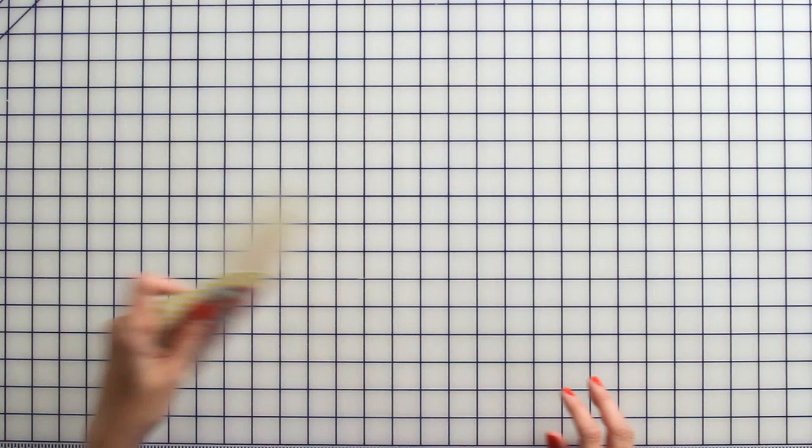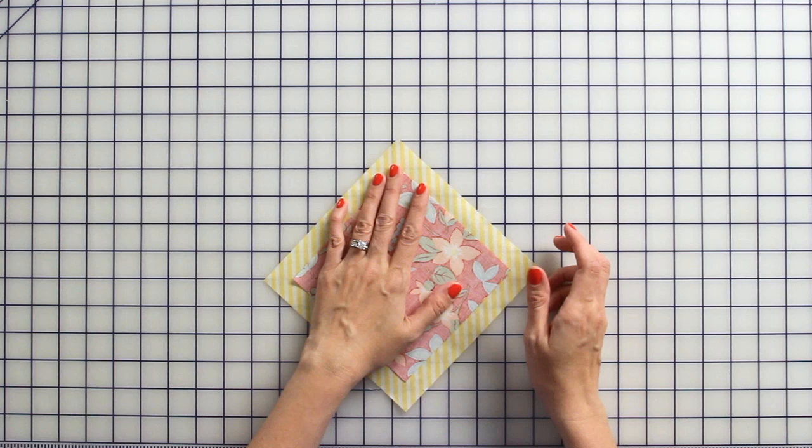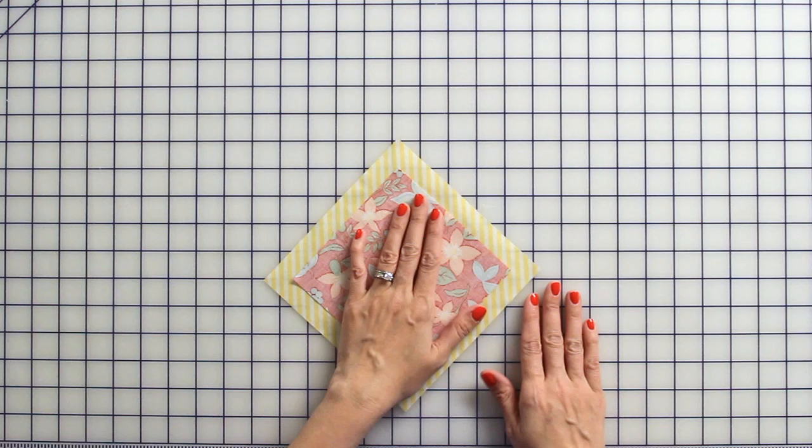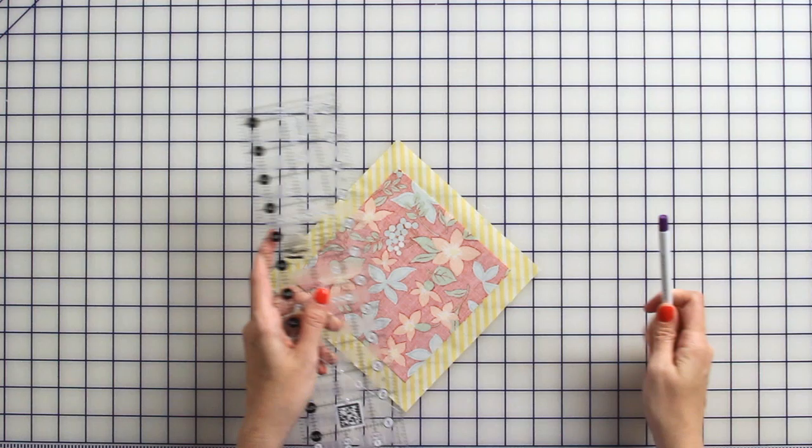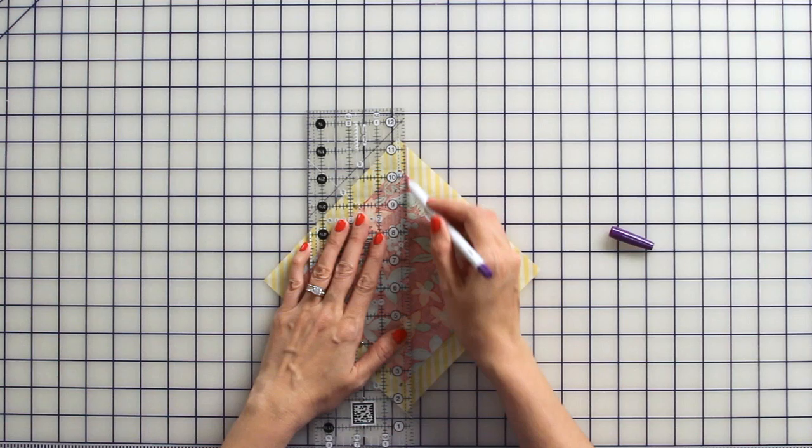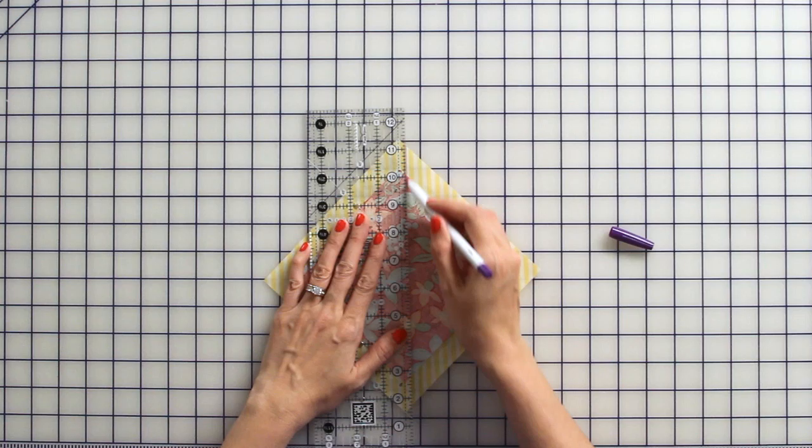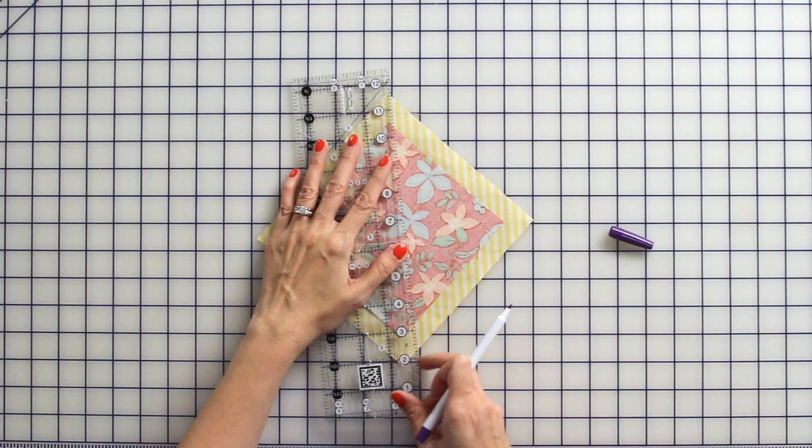Today we're going to make 2 inch by 4 inch flying geese using the large ruler. You're going to start with two squares. You can follow the cut sizes following her instructions that come with the ruler. You're going to draw a line a quarter inch from the center. Put the fabrics right sides together, and just draw a line, flip it, and then draw another line to the other side a quarter inch.